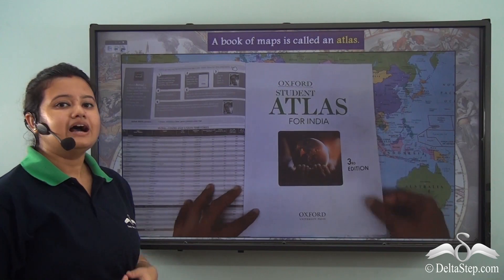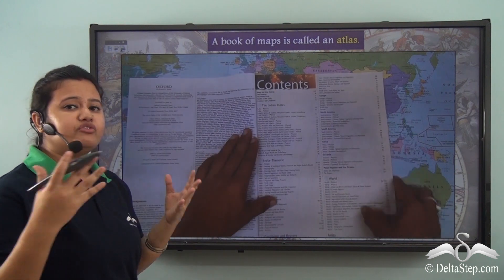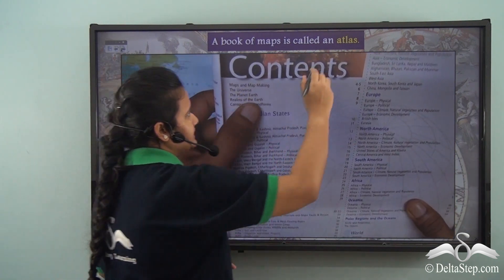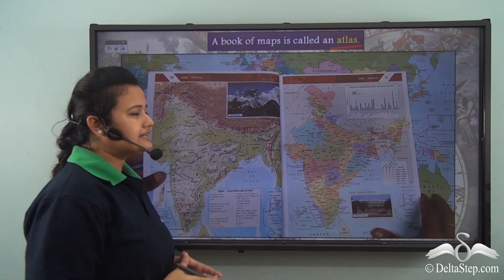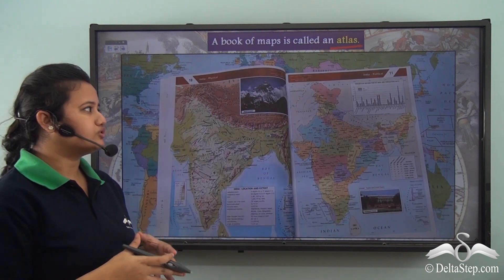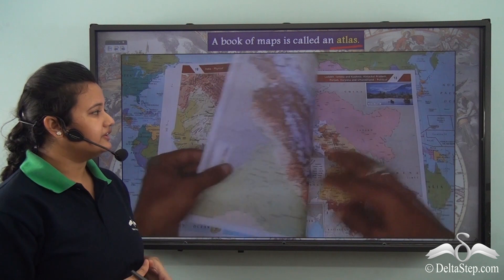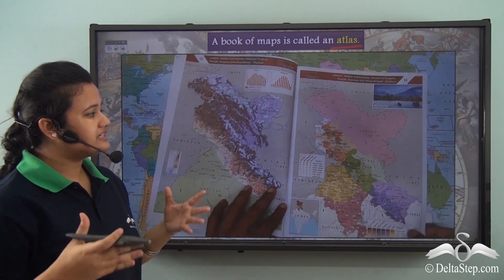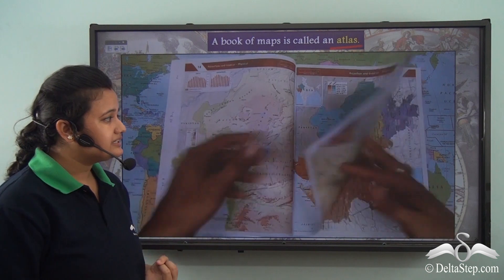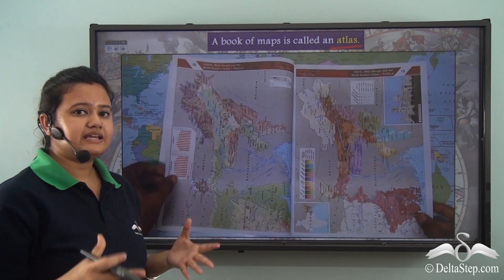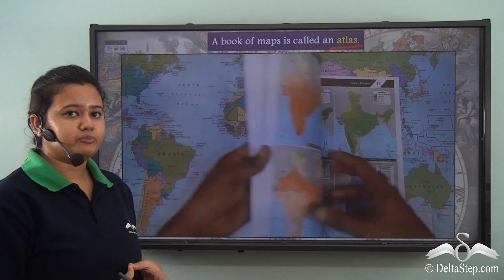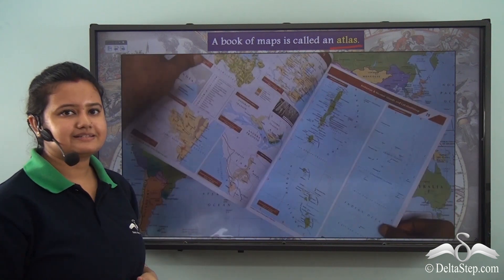A book that contains various types of maps is called an atlas. An atlas is a collection of different types of maps. Different types of maps like political maps, physical maps, thematic maps etc. have been compiled together in the form of a book, which is known as an atlas.